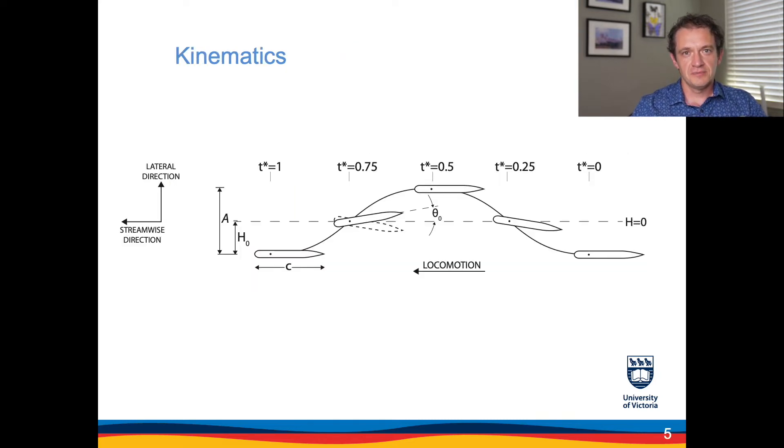All three foils undergo a combination of a pitching and heaving motion. Heaving is just translation, a sinusoidal oscillation in the direction transverse to the incoming flow, and the pitch is rotation around the axis indicated here. The combination results in a trajectory shown schematically on this slide, and the dimensionless time or the phase along the oscillating cycle is T star as indicated here. The parameters that we consider are the amplitude of the heaving motion and the amplitude of the pitching motion. Those motions are the same type.